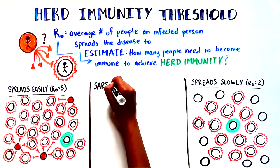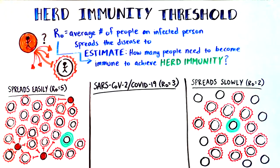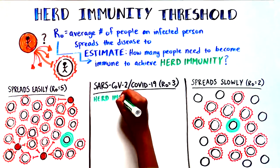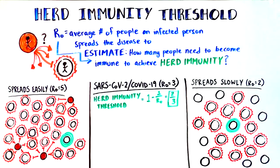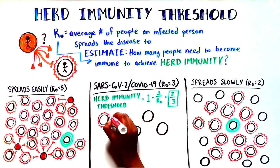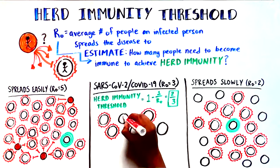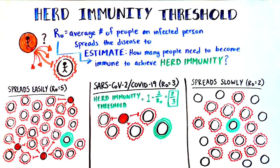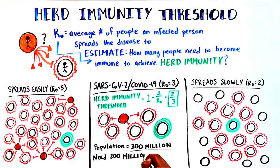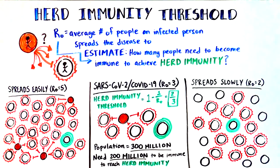For the COVID-19 pandemic, R0 is approximately 3. Our mathematical model to calculate the herd immunity threshold tells us that theoretically two-thirds of the population would have to become immune in order to slow down and eventually stop the spread of SARS-CoV-2, the virus that causes COVID-19. In a population of 300 million, for example, 200 million people would need to be immune to reach the herd immunity threshold. So how infectious a pathogen is matters.